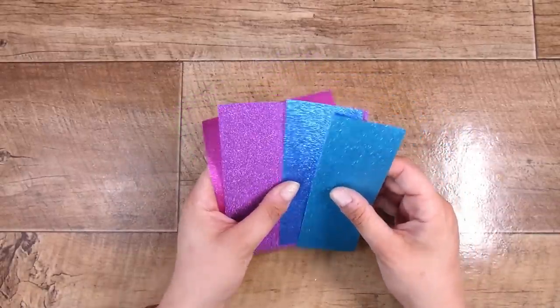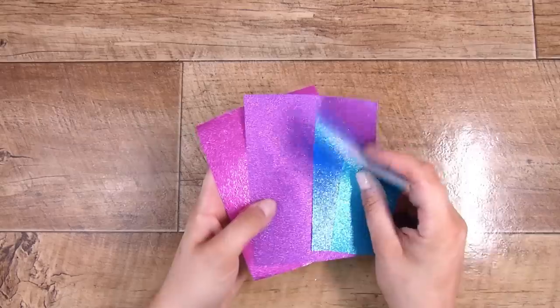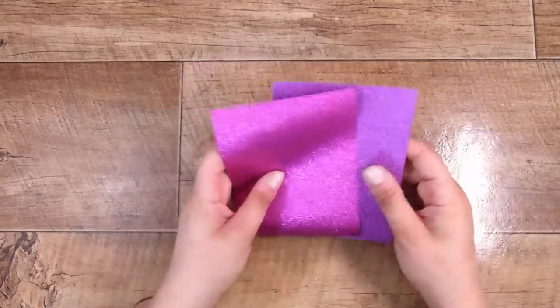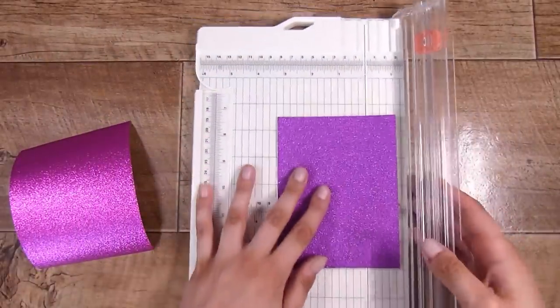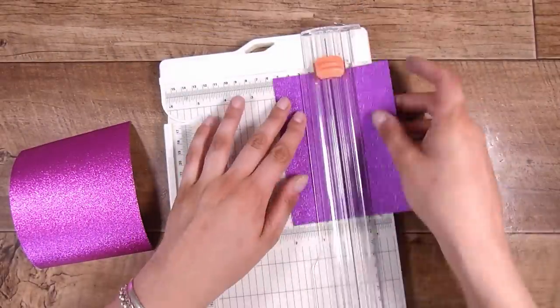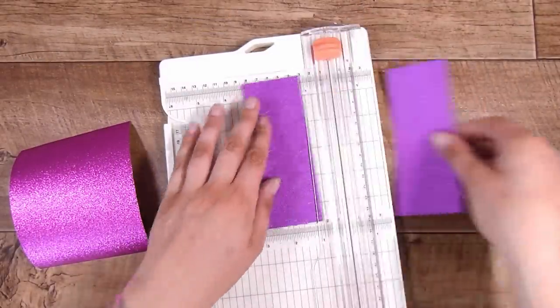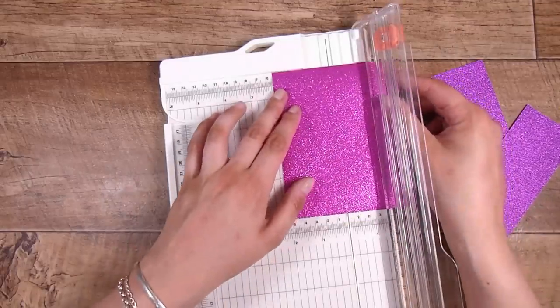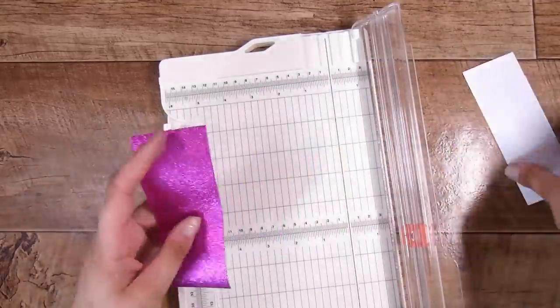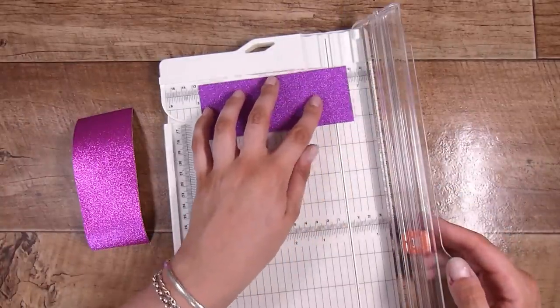Now this glitter paper is completely smooth glitter paper and I absolutely love that. I love that there's going to be no shedding and yet I have all of the sparkle and the shimmer from the glitter but no actual glitter involved. So I am going to cut this down.